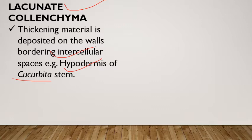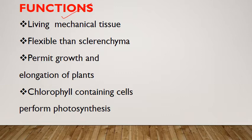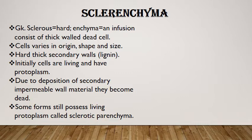Fourth is annular — uniformly thickened cells that appear circular in cross-section. Functions of colenchyma: it is a living mechanical tissue providing protection and strength to plants. It is flexible, helping in growth and elongation. Certain colenchyma cells that bear chloroplasts can also perform the function of photosynthesis.